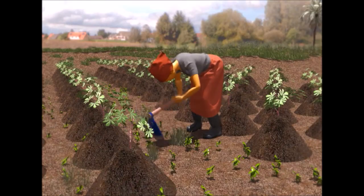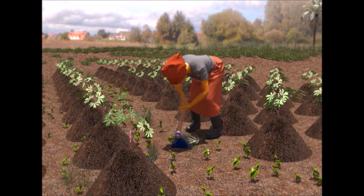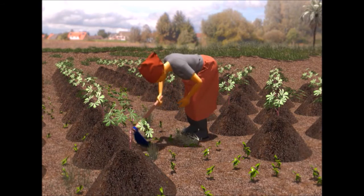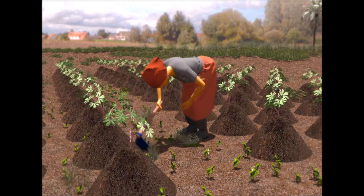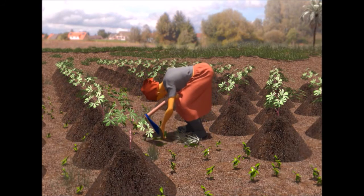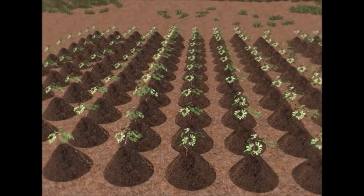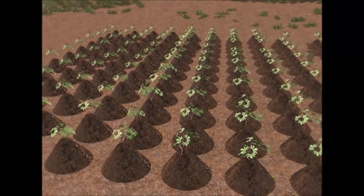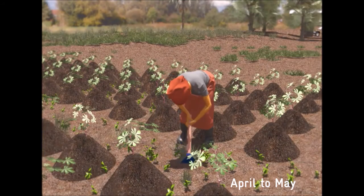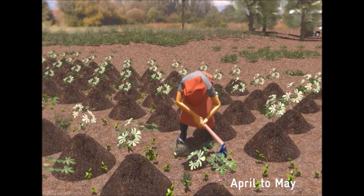Weeds steal the food and water which our cassava plants need to grow well. This is why I weed manually. I destroy the weeds on the field and heap up the soil around the feet of the plants. This way, our field is very clean and the plants grow well. I do a first manual weeding three to four weeks after planting.